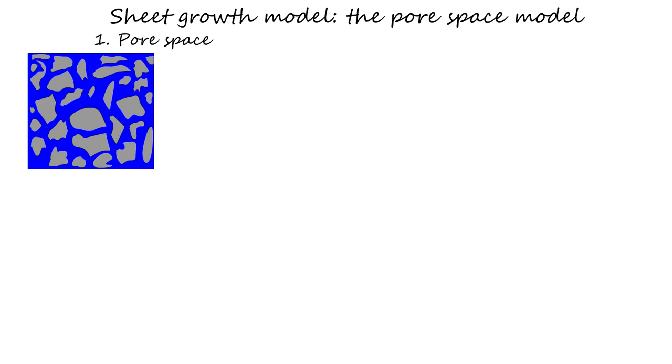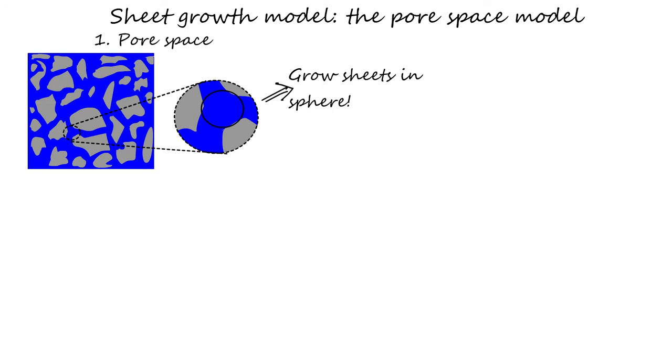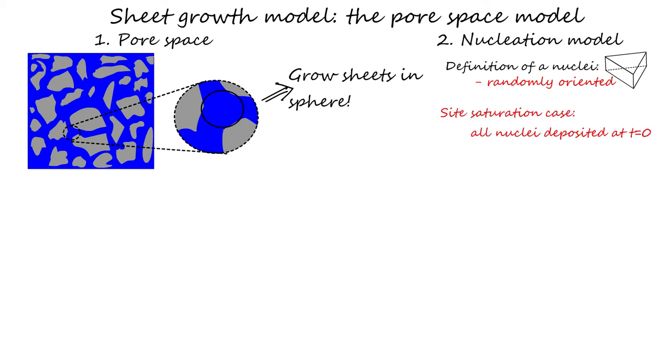We have now figured out how to grow sheets, but we still need a domain and a nucleation model. If we consider the pore space within cement paste, we find that the outer product of CSH grows in the highly irregular capillary pore space. As a first approximation for this model, we just consider a small segment of capillary pore and approximate it as a sphere. We define the nucleus in this model as a randomly oriented triangle, which is placed at the nucleation site. For this model of cement growth, we assume a site saturation case, which means all nuclei are placed in the domain at t equals zero. Growth is assumed to start only from the surface of the cement grains. The density of these nuclei was in this model arbitrarily chosen as 4000 per square micron. This number is discussed in greater detail in Merlin's thesis and the paper about this model.